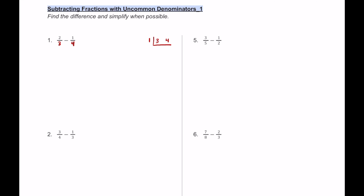One goes into three three times, one goes into four four times, and three and four have nothing else in common besides one. So multiply the outside numbers: one times three is three, three times four is twelve, and the LCM or LCD — the first time they meet — is going to be twelve. That's the denominator we're going to use.